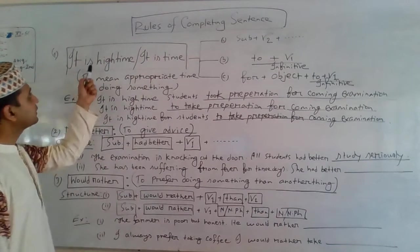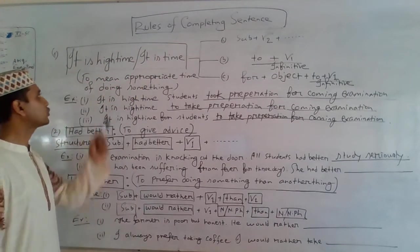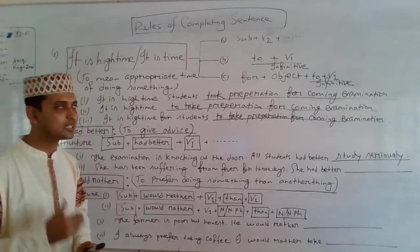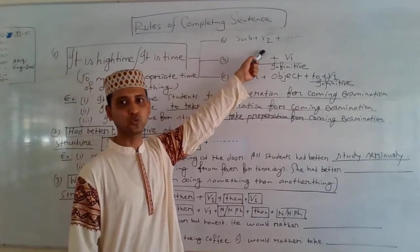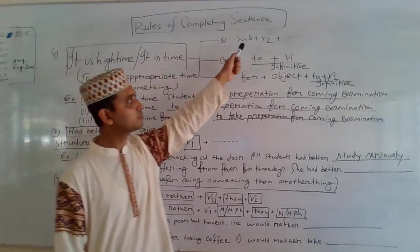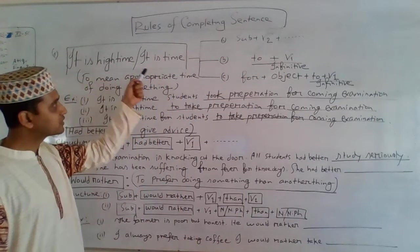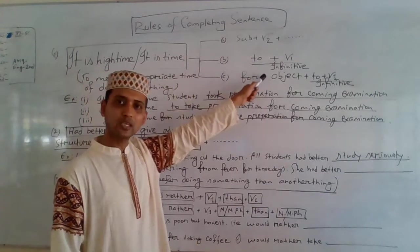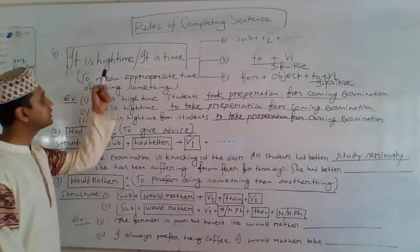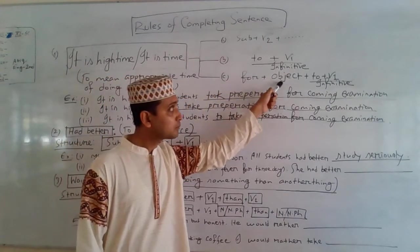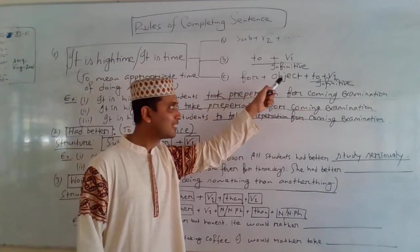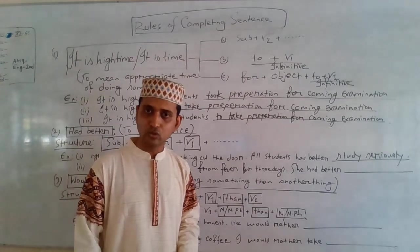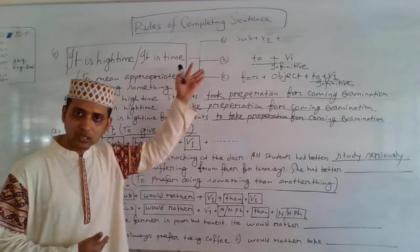Rules of completing sentences. First: 'It is high time' or 'It is time.' This construction is used to mean the appropriate time of doing something, and the structure is used in three ways. Structure 1: It is time / It is high time + subject + V2. After 'it is time' or 'it is high time,' if you get a subject, you will have to use V2. Structure 2: It is high time / It is time + to + V1 (infinitive). If you don't get any subject after 'high time,' you can use the infinitive. Structure 3: It is time / It is high time + for + object + to + V1. If you get 'for' and any object after 'high time,' you will have to use to + V1.